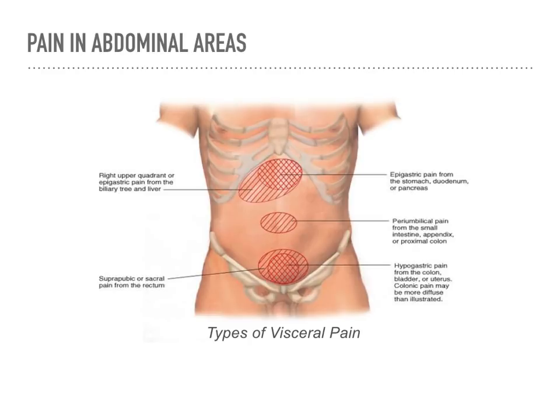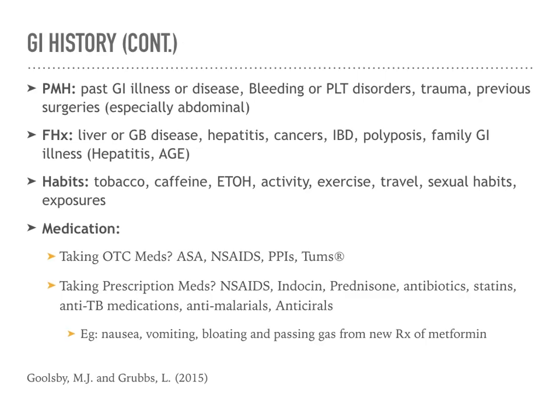This is a nice chart which breaks down pain in certain areas and what they may represent. You also want to get a good past medical history. Has the patient had chronic issues with the abdomen? Is there a known family history, especially when looking at cancers or other types of GI illnesses? What kind of habits do they have — do they have a bad alcohol problem, do they smoke? These are all important things to consider.